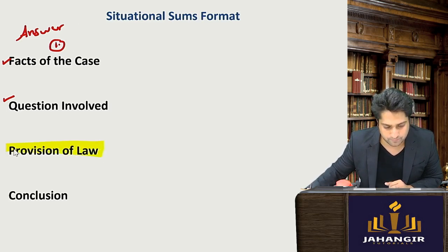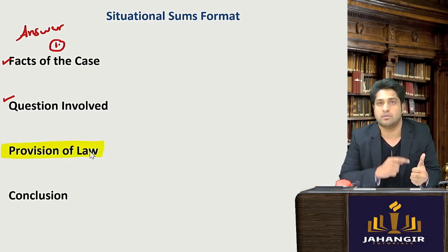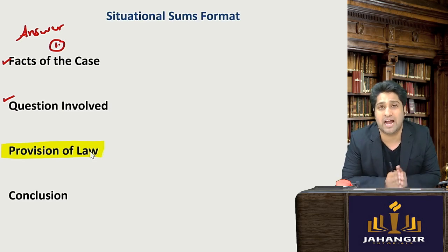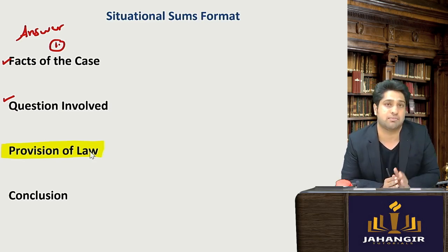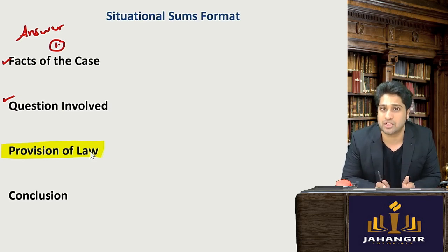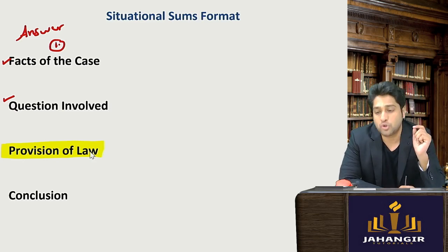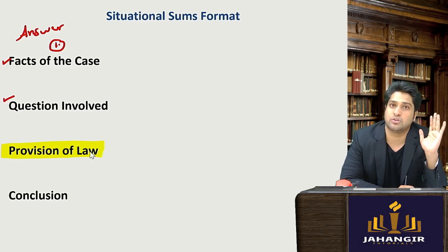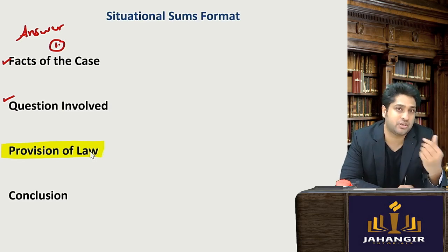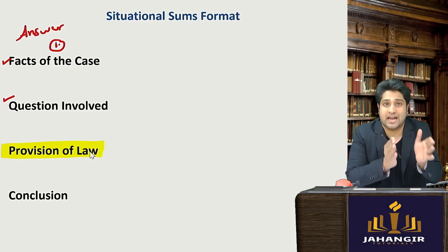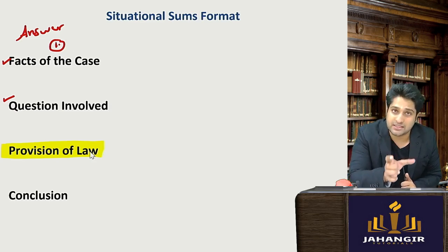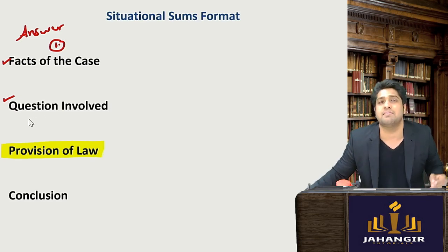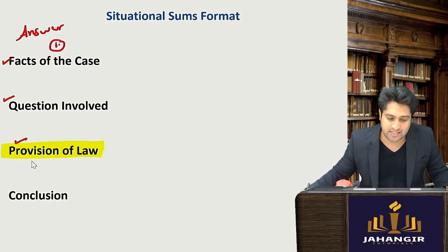The third part is where you will write the provision of law. You should know your law well — know which chapter it is from, the regulation number, the name of the act, the year it was passed, and the section numbers. Remember: only quote the section number if you know it, because if you write it wrong, you will get a straight zero. Write all section numbers in the index at the start so you don't make mistakes.